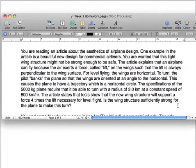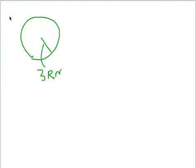So what do we want the plane to do? We want it to be able to go in a circle of radius 3 kilometers at a speed of 800 kilometers per hour.